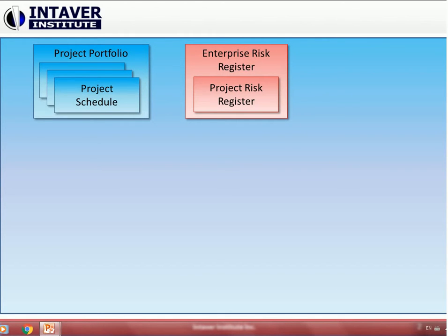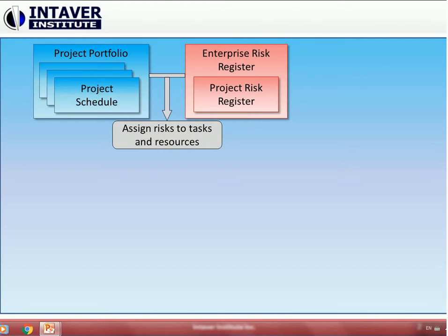The project risk registers include all information about risks that could affect the project. Once risks have been identified and added to the risk registers, they can be assigned to a project's tasks or resources.